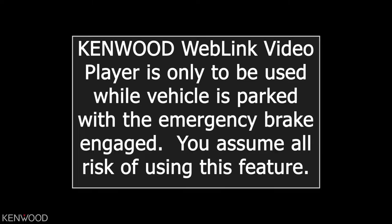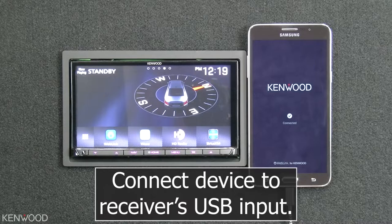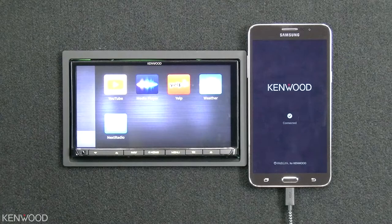First, ensure that the Weblink for Kenwood application is installed on your iOS or Android device. Then, connect your device to the receiver's USB input and select the Weblink source. From the Weblink home screen, select the media player icon.